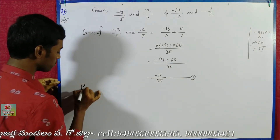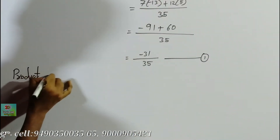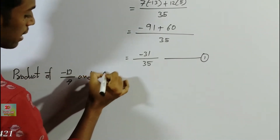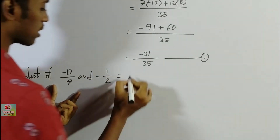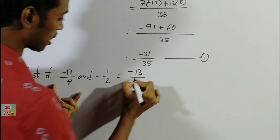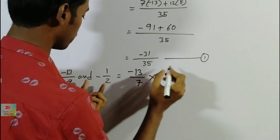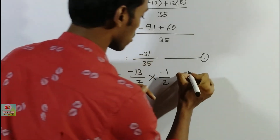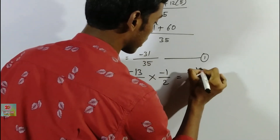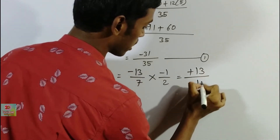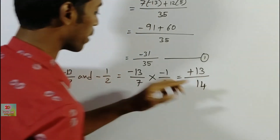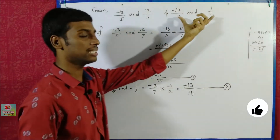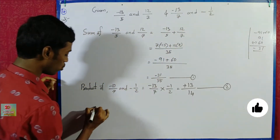Now the product of minus 13 by 7 and minus 1 by 2. Minus into minus gives plus, so 13 into 1 is 13, and 7 into 2 is 14. Therefore the product equals 13 by 14. This is equation 2.